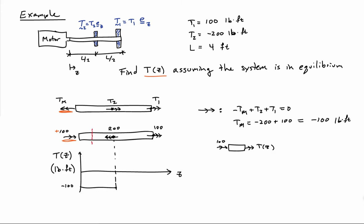So if I make a section cut between the motor and the second torque, I have this free body diagram here, which tells me that T of Z anywhere between the motor and the second torque is going to be minus 100 foot-pounds. So I get a constant value from the motor all the way out to L over 2.